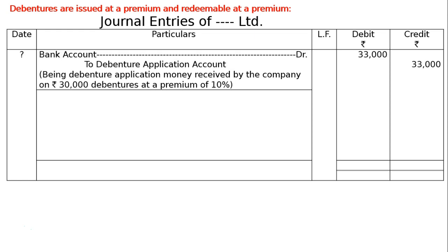After drawing the format, the first entry is bank account debited to debenture application account. We are issuing 30,000 debentures at a premium of 10%. The application money will be received at Rs 30,000 plus 10% i.e. Rs 3,000. Hence, the amount will be Rs 33,000 in both debit and credit. Bank account debited to debenture application account — being debenture application money received for Rs 30,000 debentures at a premium of 10%.